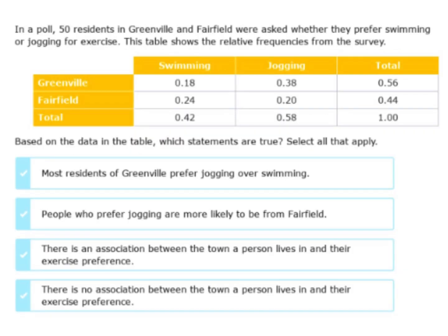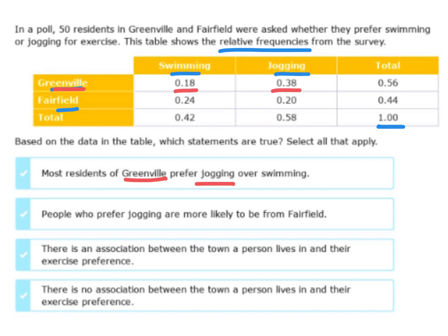Next, read carefully. In a poll, 50 residents in Greenville and Fairfield were asked whether they prefer swimming or jogging for exercise. The table shows the relative frequencies — that decimal response, the part over the total. This represents the 50 people as one whole amount. We have our locations and swimming and jogging as labels. The first question says most residents of Greenville prefer jogging over swimming. I go to Greenville and look at jogging versus swimming — the jogging number is bigger than the swimming number, so yes, that is correct.